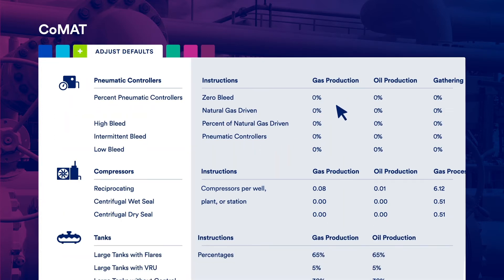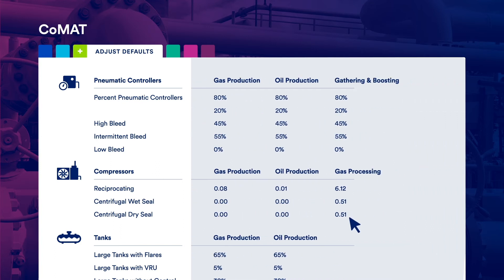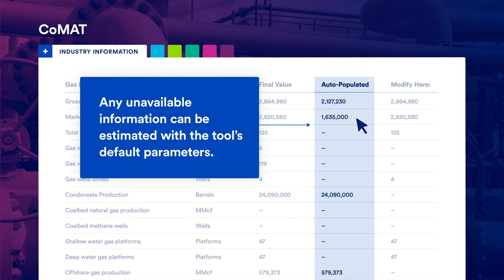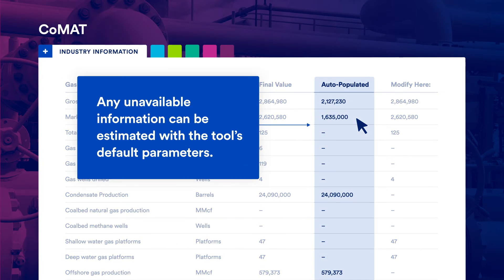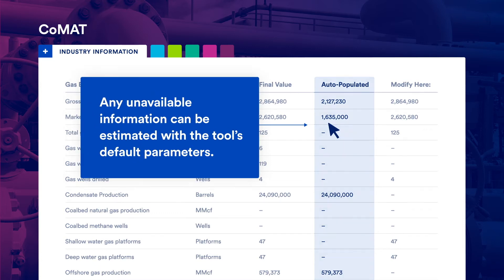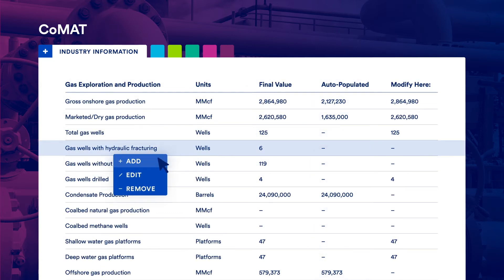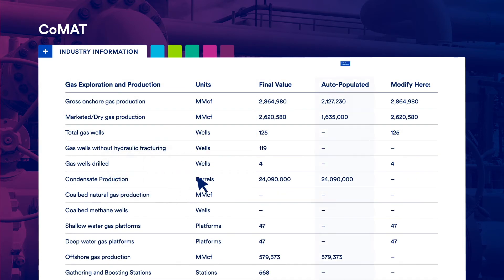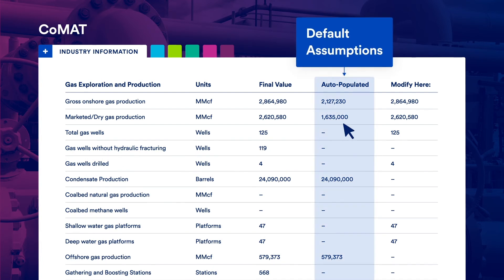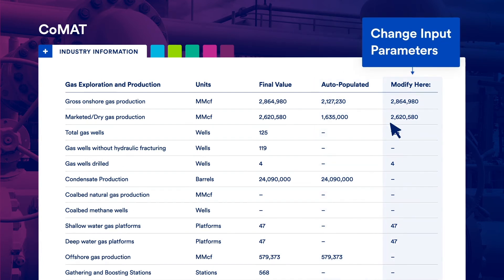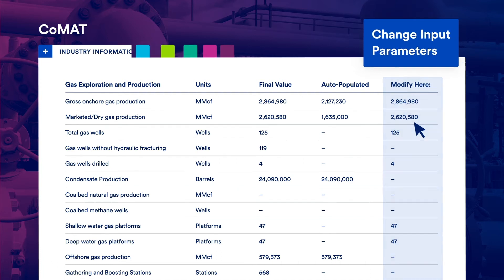Next, tailor the equipment inventory built into CO-MAT based on the on-the-ground knowledge of oil and gas operations in your country. Any unavailable information can be estimated with the tool's default parameters. Add, edit, or remove fields to best reflect your country's unique case. Make estimates using purely default assumptions, or change input parameters at an incredibly granular level, or anything in between.